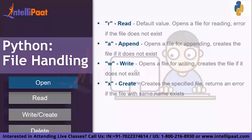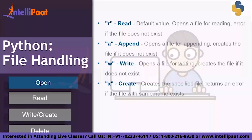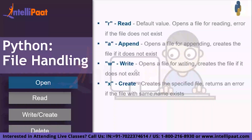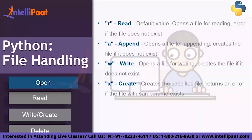Next is append, and the mode is 'a'. It will open a file for appending, and in case the file does not exist, it will create a new one. Next mode is 'w', which is write. It opens a file for writing and creates a file if it does not exist. Next and final is create, that is 'x'. It creates the specified file and returns an error if a file with the same name already exists.